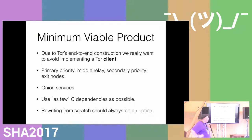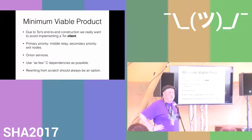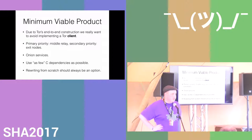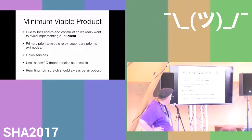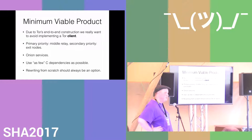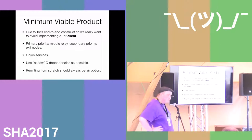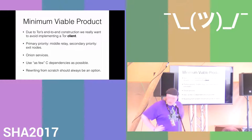We set out to figure out a minimal viable product. Due to Tor's end-to-end nature, we really didn't want to implement a client because that's where all the difficult logic is — the client decides the circuit paths, does all the crypto negotiations, etc. So we settled on doing a middle relay as the primary priority and exit nodes as the secondary priority. Onion services we're ignoring for now, and we want to use as few C dependencies as possible.